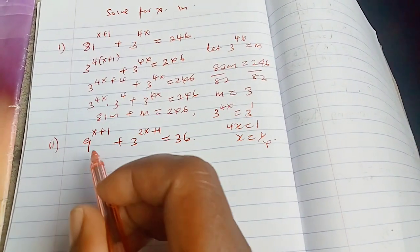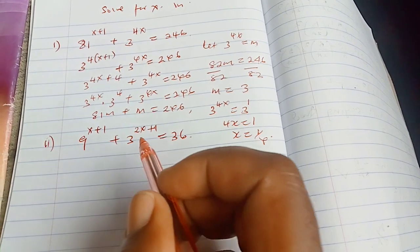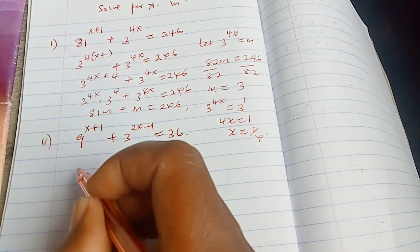So next question here, 9 to the power x plus 1 plus 3 to the power of 2x plus 1 equals to 36. Again, we do the same thing.